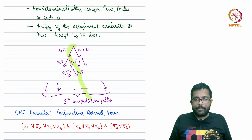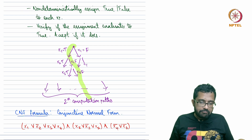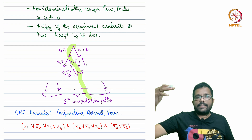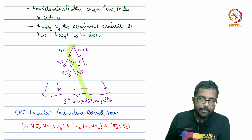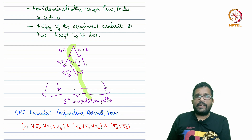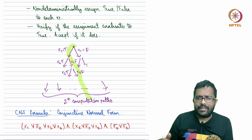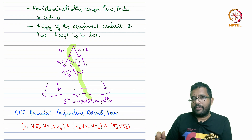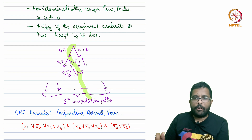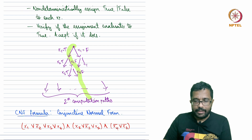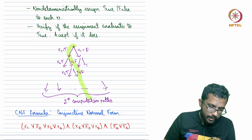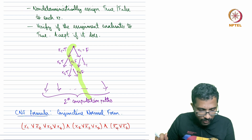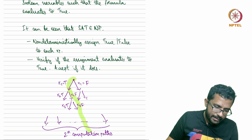This is clearly an NP algorithm — a correct non-deterministic algorithm. The running time is polynomial: it takes n steps to non-deterministically assign true or false to each of the n variables x1 to xn, and then linear or at most polynomial time to verify whether the assignment satisfies the formula. This shows that SAT is in NP.